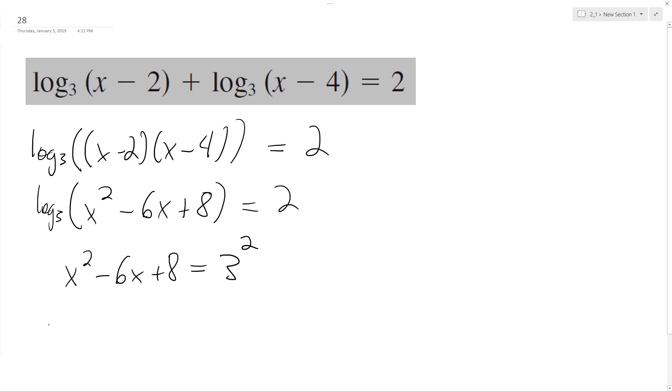And next what this is going to become is x squared minus 6x and then move the 9 over, so it becomes minus 1 equals 0. And to tell you the truth, I don't know.